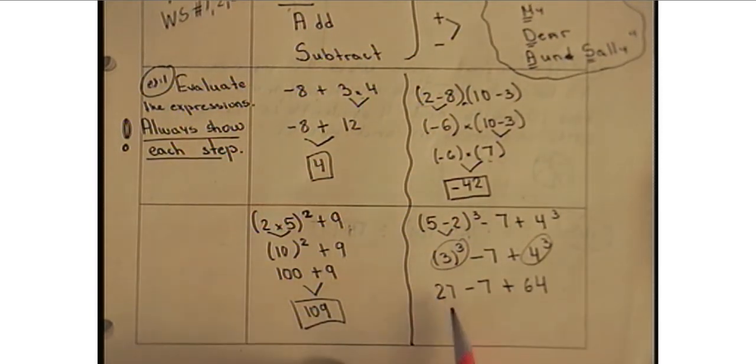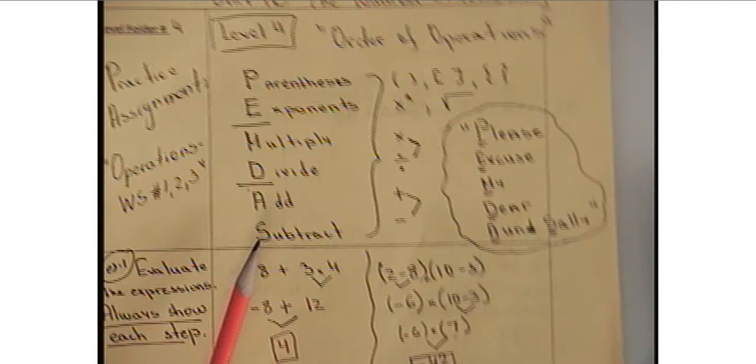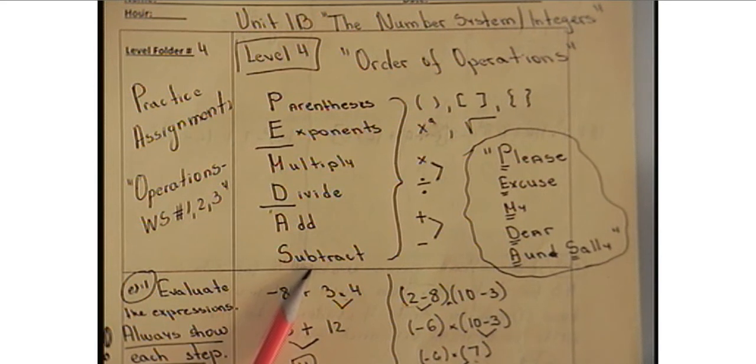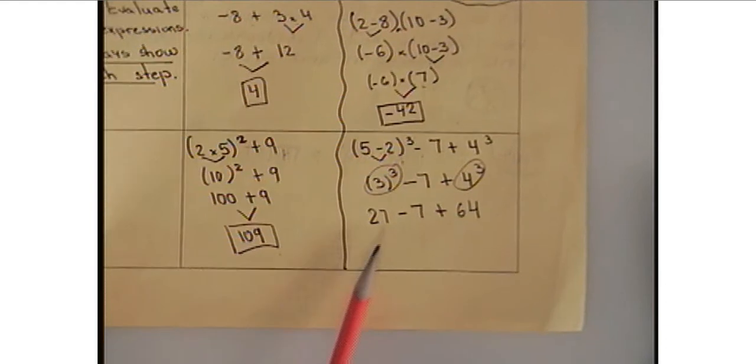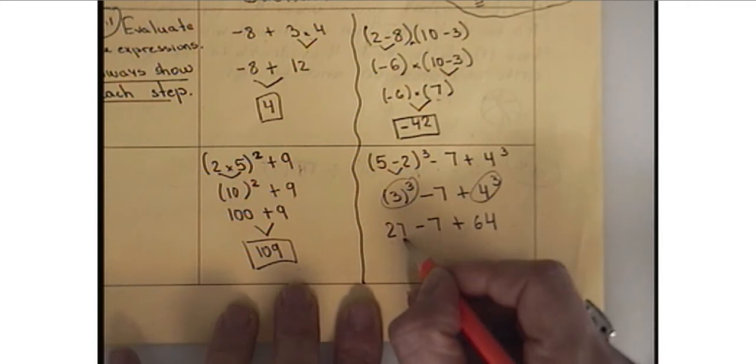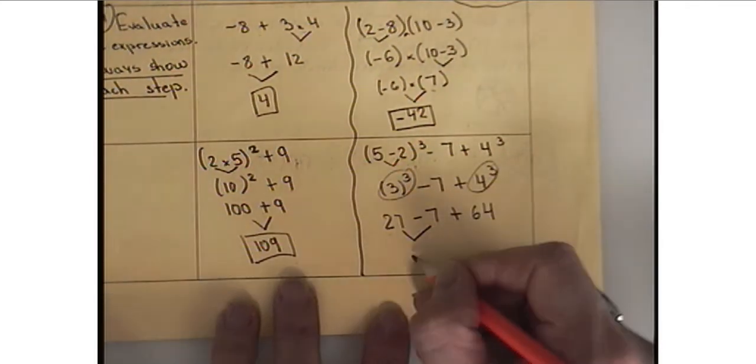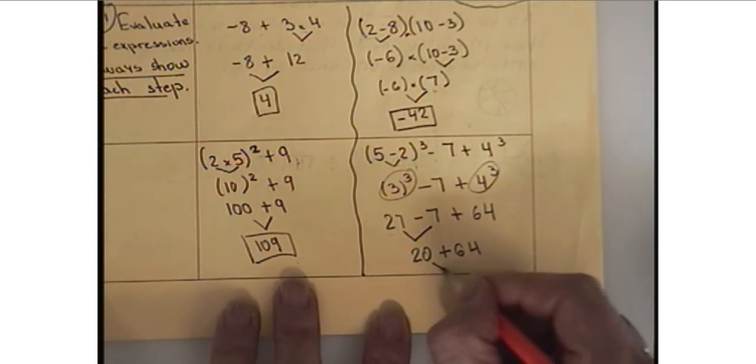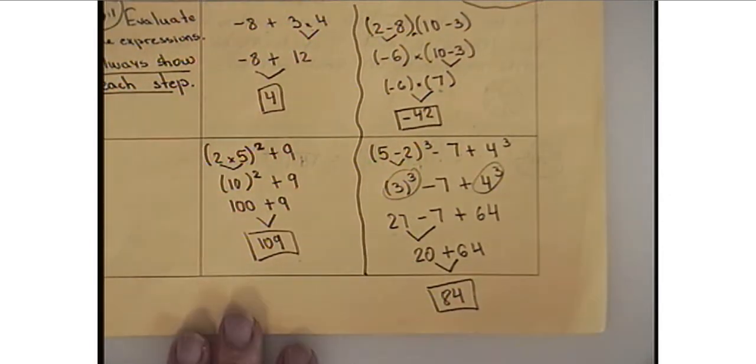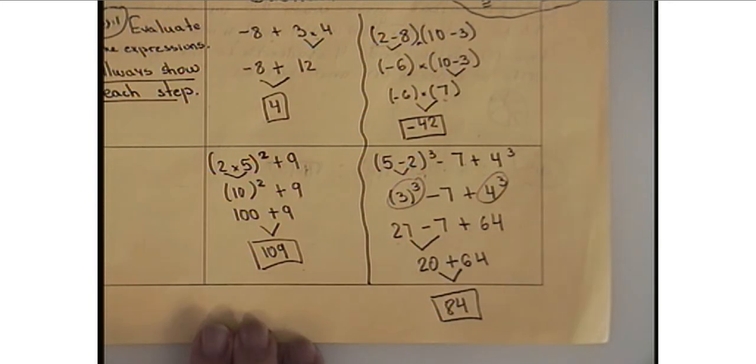So now I have subtraction and addition of integers. Now, PEMDAS rule says addition and subtraction. It doesn't mean addition has to be first and subtraction second. I want you to be aware of that. When you get to the point when you have addition and subtraction together, you always start from left to right. So we start with those two first. 27 minus 7 is 20 and then plus 64. So the final answer here will be 84. So again, addition and subtraction or multiplication and division together, we start from left to right. So this was an example of addition and subtraction.